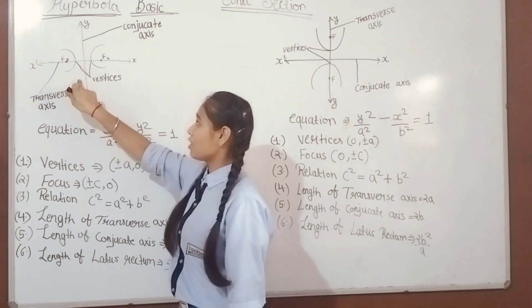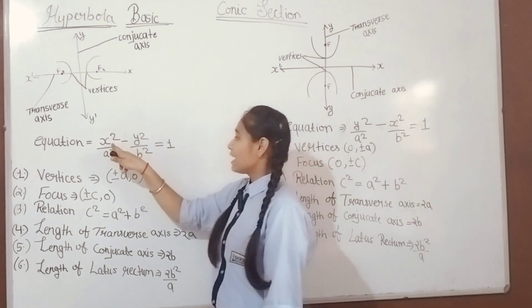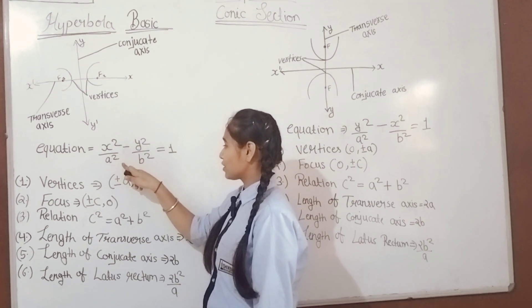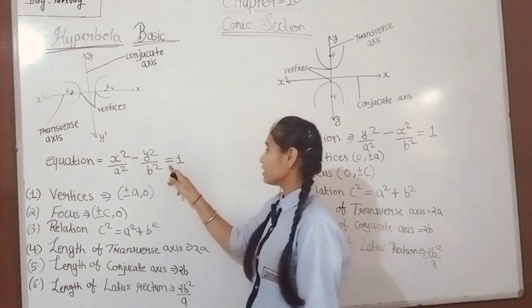If the hyperbola is drawn on the x-axis, we will apply this equation: x² / a² - y² / b² = 1.